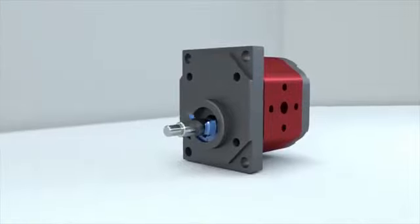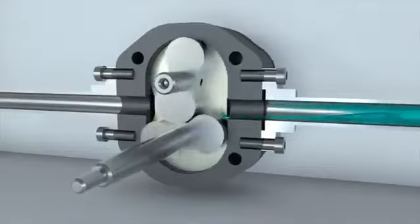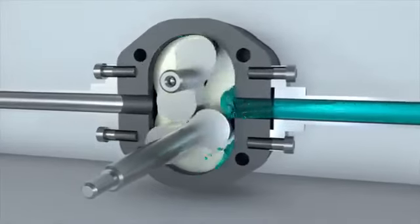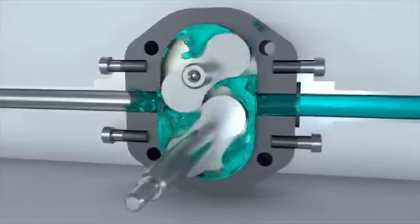Lobe pumps work as follows. As the rotors rotate, the volume of the chamber on the right will increase and the liquid from the suction channel will fill the vacated volume. As the rotors turn, the liquid in the trapped volume will be transferred.